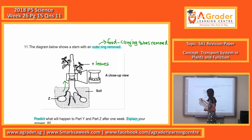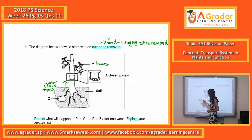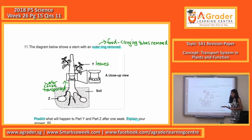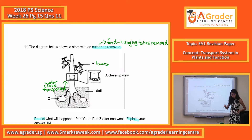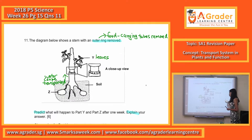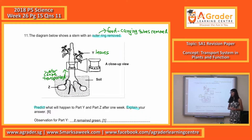Water can still be transported up. Since water can be transported up, the leaves can still make food and survive. So what happens is the leaves will remain green. So for the observation of Part 5, it remains green.